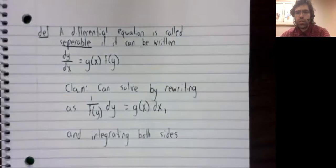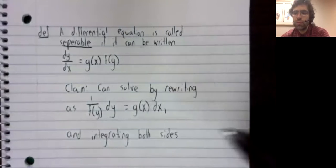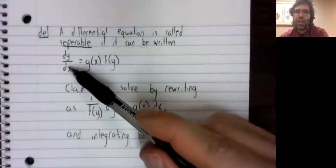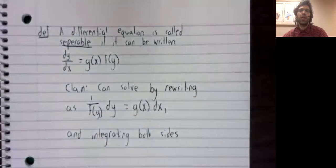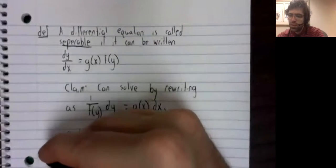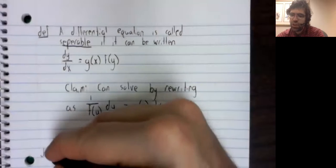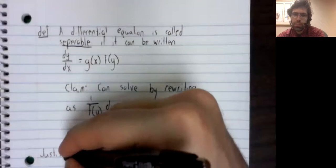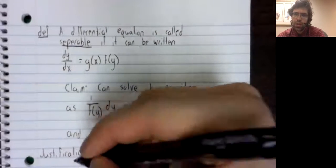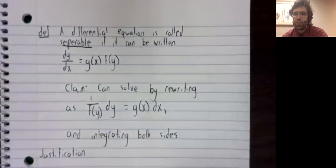And we've addressed this before, but it's not in the least obvious why this should be true. This is not a fraction. We can't actually multiply both sides by dx. So let's try to offer up a justification of this.